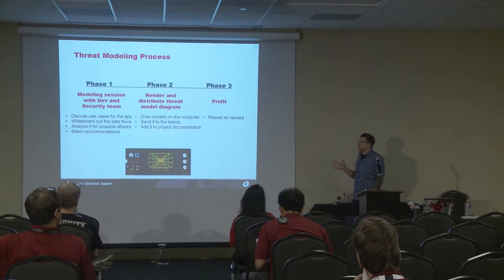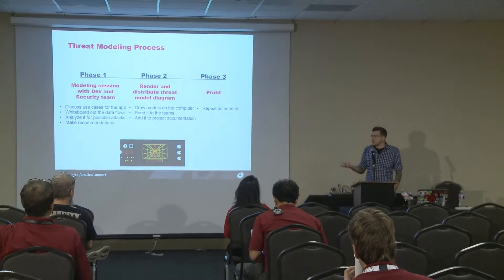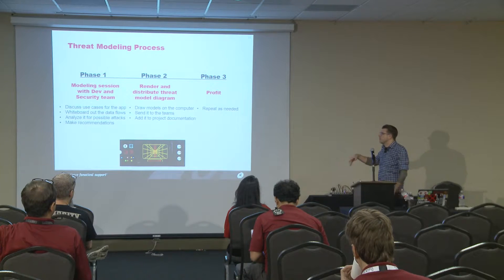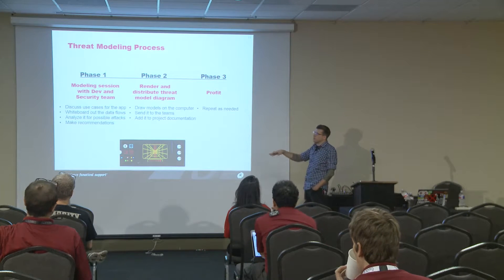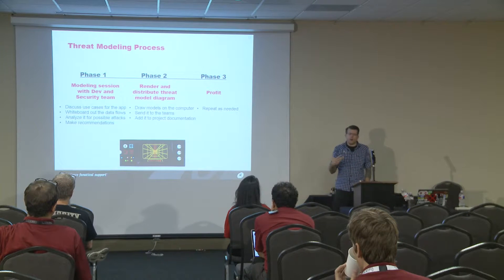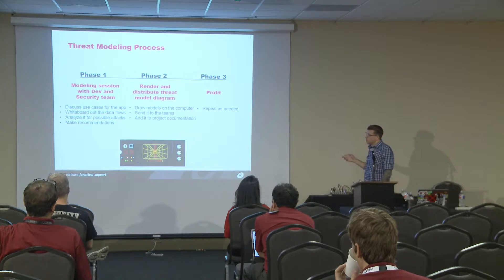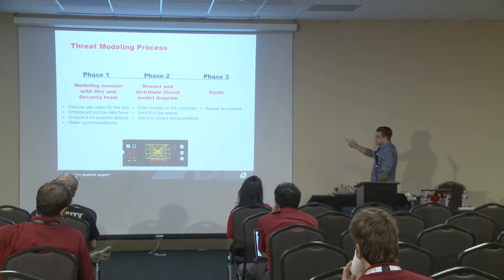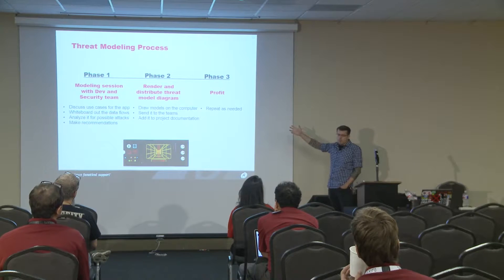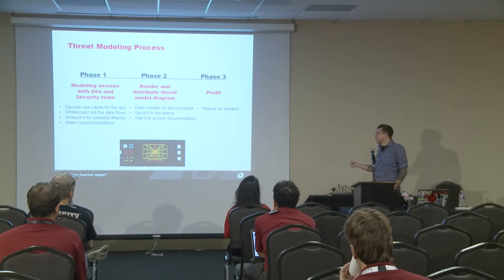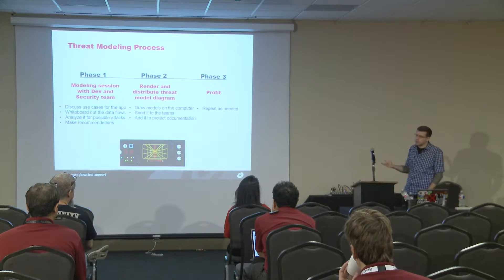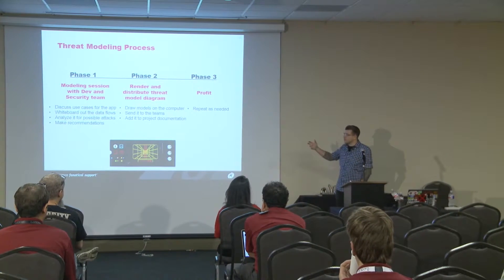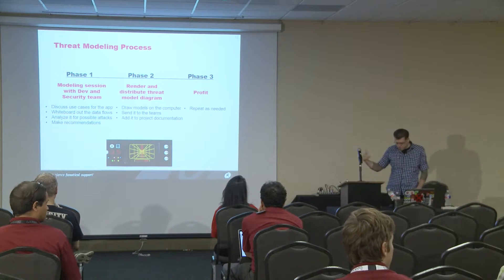Generally we never find anything that's a true vulnerability at that point, and hopefully it's early enough in the design phase where we can say, hey, you probably want to add auth here and make this encrypted. The best part is we use this as the kickoff for our testing team — before our security testers test anything, we do this so we have an idea of what we're testing and why. Then I take that back, draw up a model, distribute it to people who need it, it gets added to documentation as part of the software project's lifecycle, added to our repo of other models, and we repeat as needed.